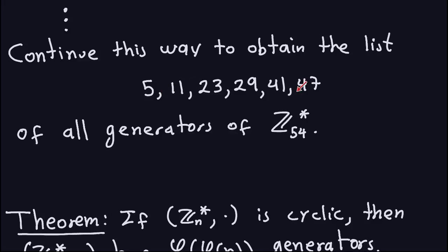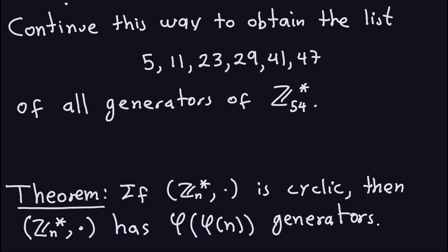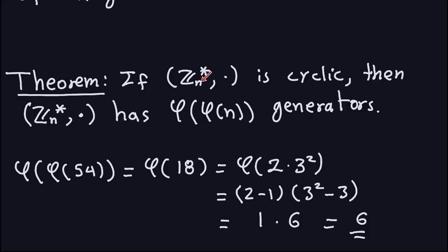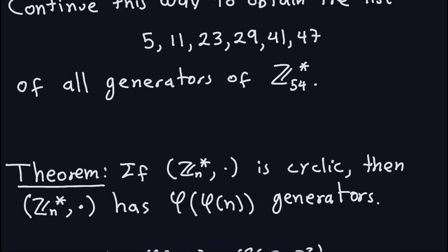If you haven't watched the previous video, I suggest you go back and watch it first, as this video will make more sense. We want to know exactly how many generators this group has, and this is given by a theorem: if Z_n* is cyclic, then I can easily compute the number of generators by applying Euler's phi function twice to n. So I compute φ(n), and then apply φ again to that result — that gives the number of generators.